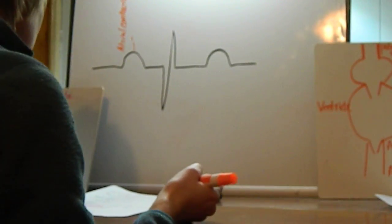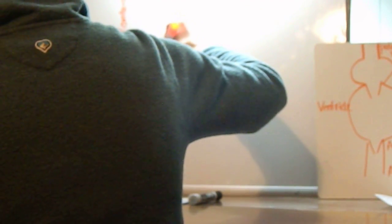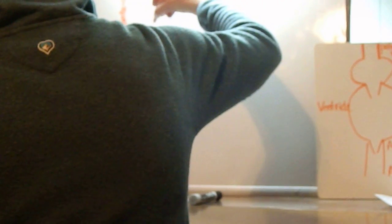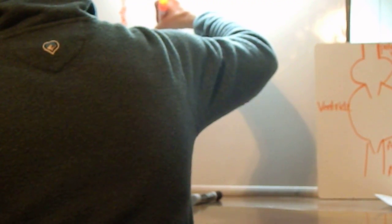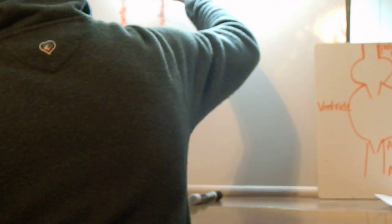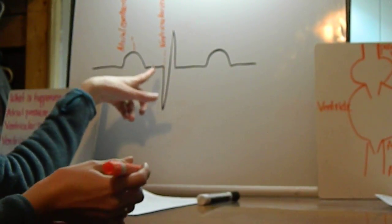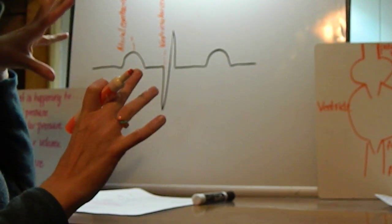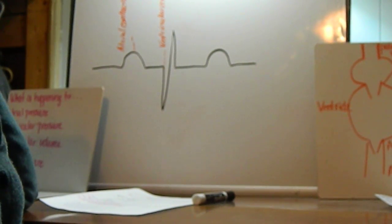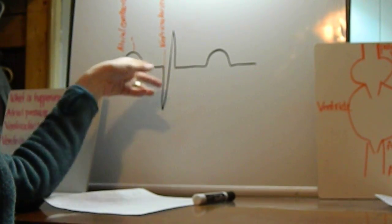Next, I'm going to label ventricular contraction, which occurs pretty close to the beginning of the QRS complex — not right at the beginning, but pretty close. It occurs closer because of the massive amounts of innervation, electrical innervation, and how quickly the impulses travel through the ventricle. That's why it's closer to the actual electrical events.